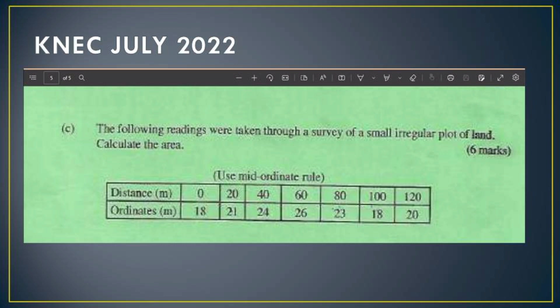The mid-ordinate is equal to the width interval multiplied by the sum of the mid-ordinates. The width intervals are seen on the difference in the distances between the ordinates. So the distance between the first ordinate and the second ordinate will give us the width interval. They will have an interval of 20, then we go ahead.